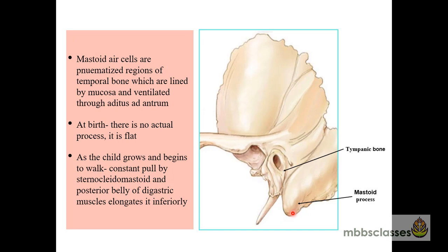Two muscles are attached to the mastoid: the first is the sternocleidomastoid and the second is the posterior belly of the digastric. Their role is that as the child starts growing, by the first year of age, as the child starts lifting their head and starts walking, the sternocleidomastoid and posterior belly of the digastric keep a constant pull and because of the aeration, the air cells get pneumatized and the mastoid assumes its solid bulbous shape.